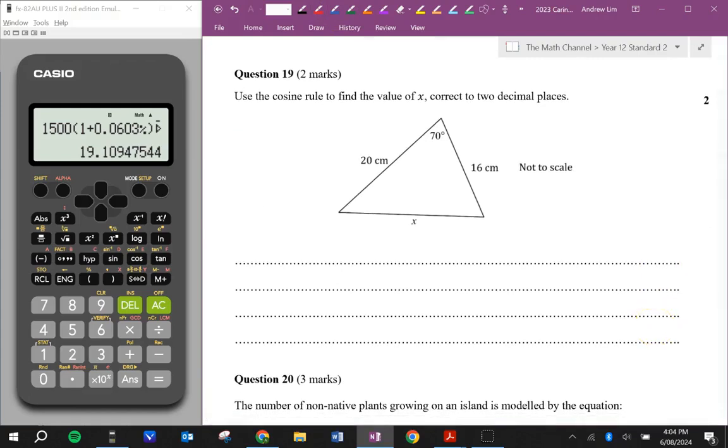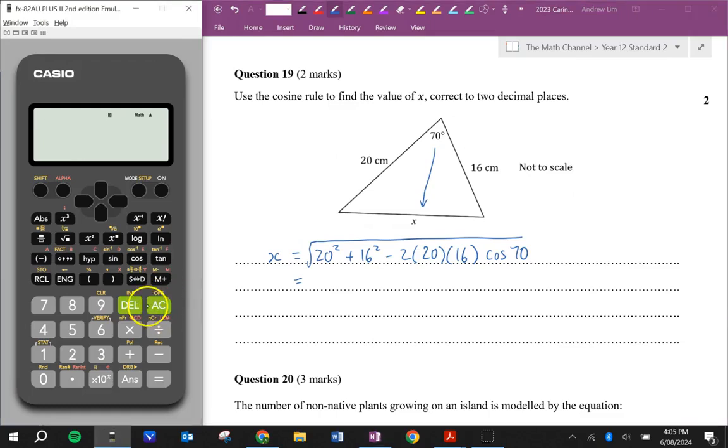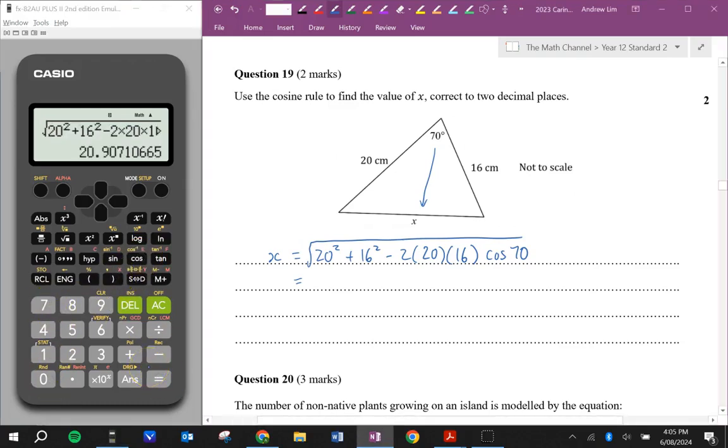Use the cosine rule to find the value of x correct to two decimal places. So cosine rule. X is equal to square root of a squared plus b squared minus two lots of ab cosine c. Remember, x is opposite the angle. So the side that we're trying to find, we're going to use the angle that's opposite it. It doesn't matter what a and b are. So we've got the square root. 20 squared, 16 squared. Minus two times 20 times 16 times cosine of 17. 20.91.